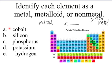So looking at the list, cobalt, the first one, here's cobalt, it's on the left side definitely, it is a metal. For B we have silicon, silicon is sitting right on the stairs, it is a metalloid.